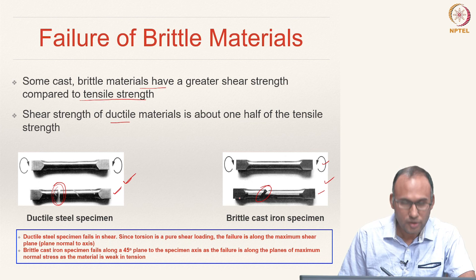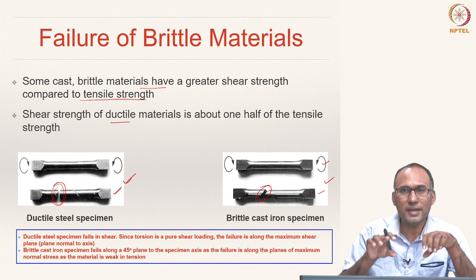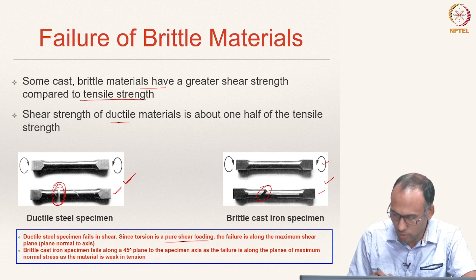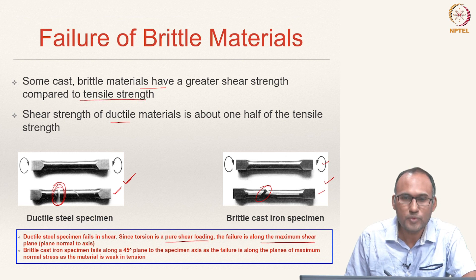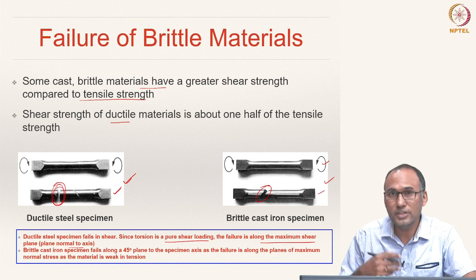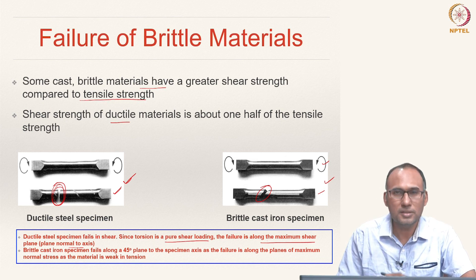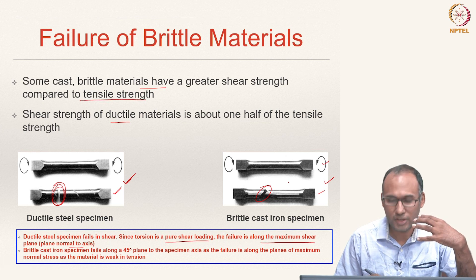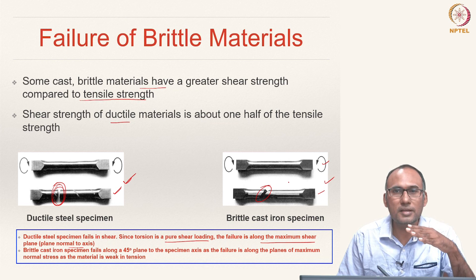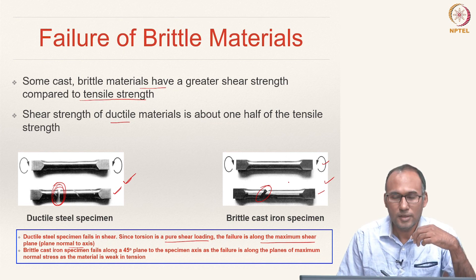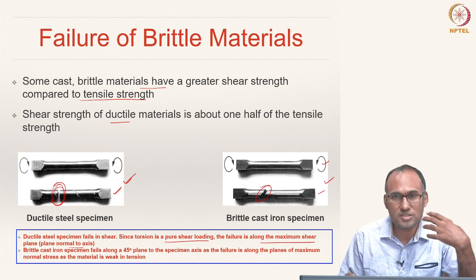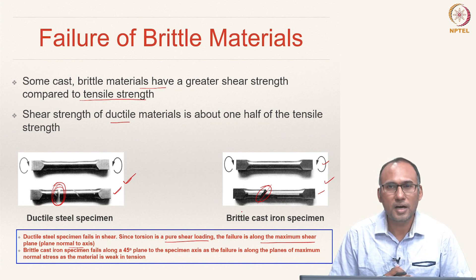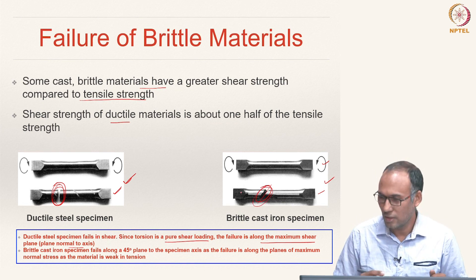Why does that happen? We know that ductile materials fail in shear. When you are applying torsion, the maximum shear stress is on that plane, and that is the reason why — since torsion is a pure shear loading — the failure is along the maximum shear stress plane, which is normal to the axis of application. Brittle materials however fail due to normal strength. Although you are applying pure shear, as we discussed in the context of Mohr's circle, there are planes in the material which experience normal stress. The plane along which the normal stress is maximum happens to be the 45-degree plane, and hence brittle materials show failure at 45 degrees.